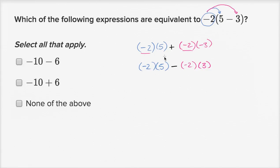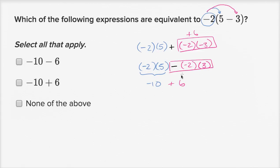Negative two times five is negative ten, and then negative two times negative three is positive six. Or over here, negative two times three is negative six, but then we subtract it, so you get positive six either way. So you get negative ten plus six, and that's this choice right over here, which evaluates to negative four — which this expression does evaluate to. This one up here evaluates to negative sixteen, so I won't select it.